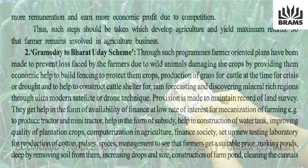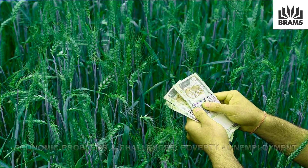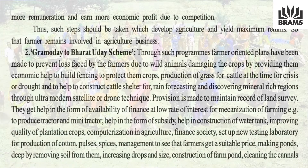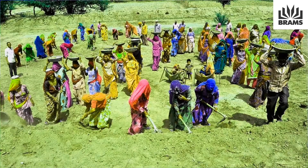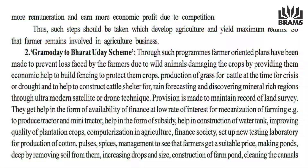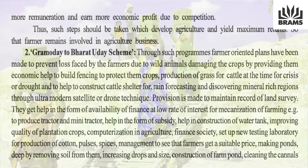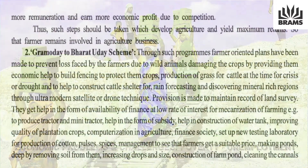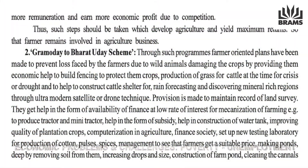Management measures ensure that farmers get suitable prices. Ponds are made deeper by removing soil, farm ponds are constructed, and their size is increased. Canals and reservoirs are cleaned for water storage and their length is increased. Resettlement of water tanks and repairing of check dams is done to increase water storage capacity.